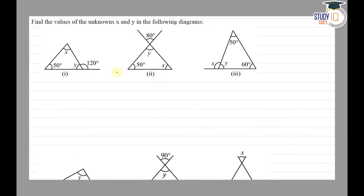Hello everyone. This question appears in Class 7th NCERT chapter on triangles and its properties. This is the second question of Exercise 6.3. The question says: find the value of the unknown x and y in the following diagrams.